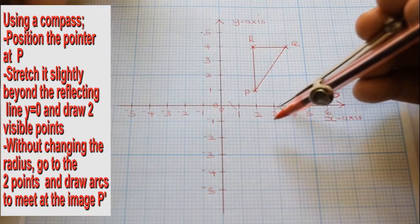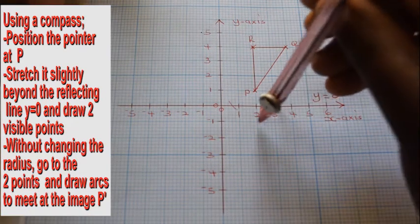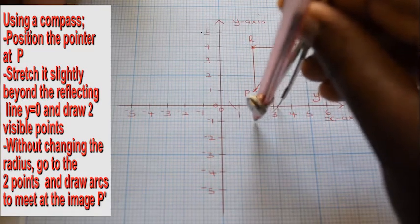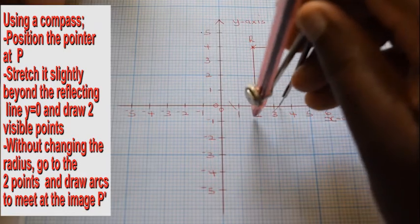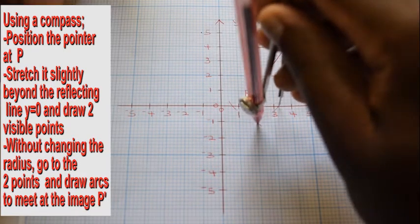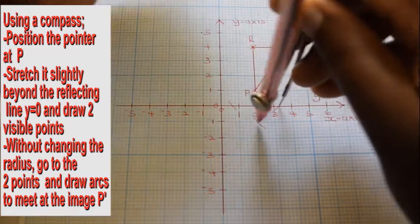Without changing the radius, lift the compass and position it onto one of the crosses and make an arc on the other side of the reflection line opposite the object.